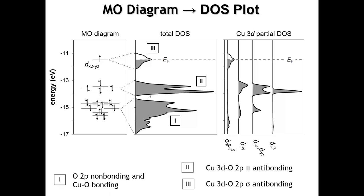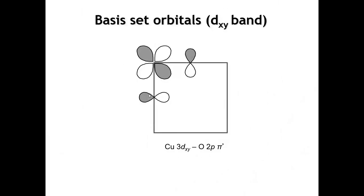We can't get much further from our MO diagram than the density of states. If we want to say more about how wide the bands are and plot something like the electronic band structure itself — the spaghetti diagram — we have to look at the orbital overlap. So let's do that for two bands, starting with the DXY band.